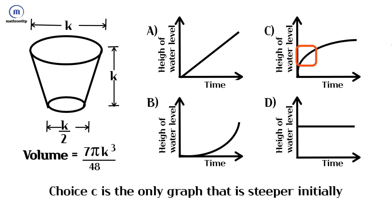Choice C is the only graph that is steeper initially and then gets less steep.